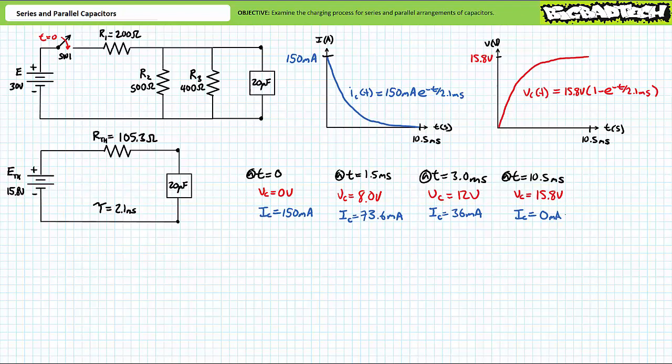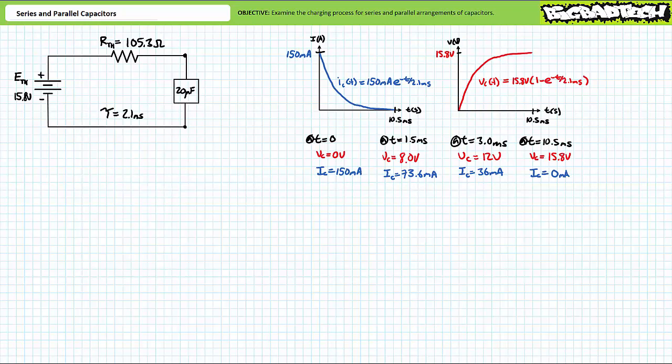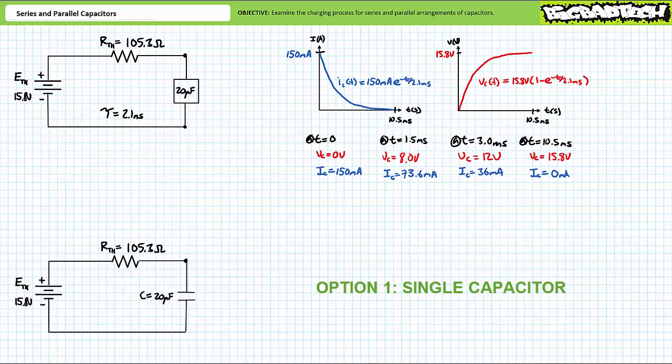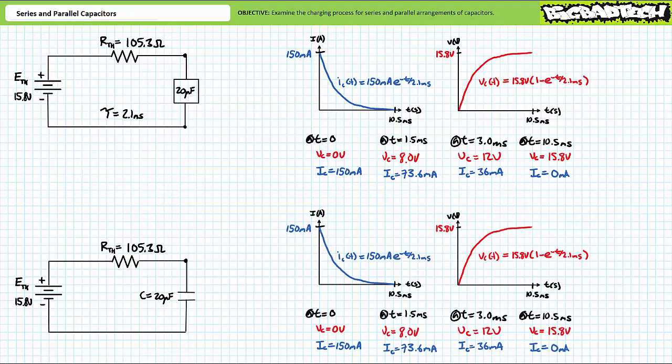Let's now explore the details of series and parallel arrangements of capacitors. Given the elements inside the box have a total capacitance of 20 microfarads, we're presented with five options, three of which are stupidly simple and two of which necessitate a little thought. Option one, the easiest: the element inside the box really is a single 20 microfarad capacitor. All previous analysis and results hold true — cut, paste, problem solved.